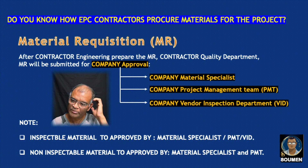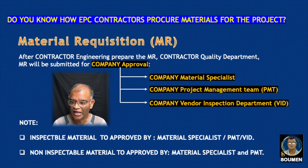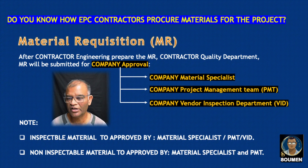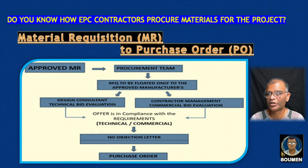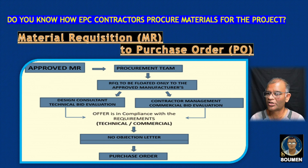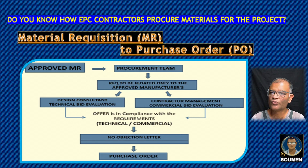We must note that inspectable materials are to be approved by material specialist, PMT, and VID; non-inspectable materials need only material specialist and PMT approval. Now that the material requisition is approved, we need to purchase the material. For purchasing, we need to prepare a purchase order — but it is not a straightforward step. There are many sub-steps to follow before preparing the purchase order.